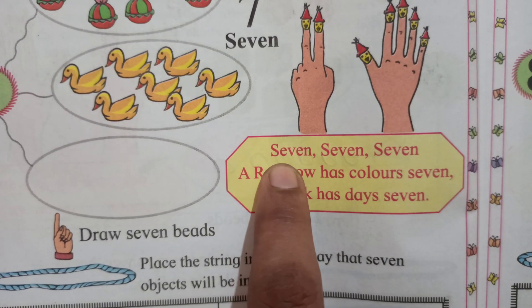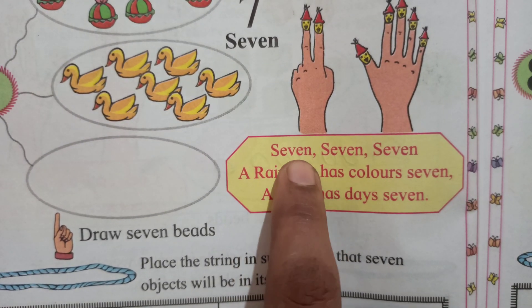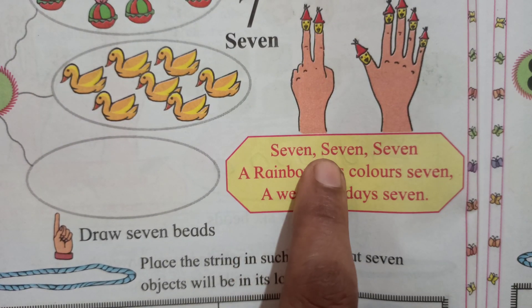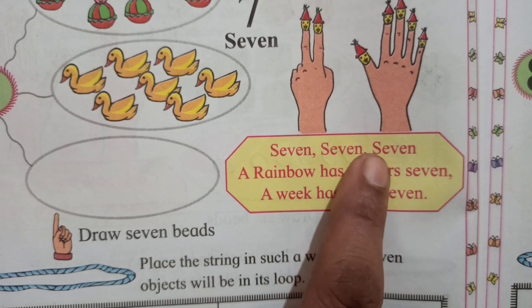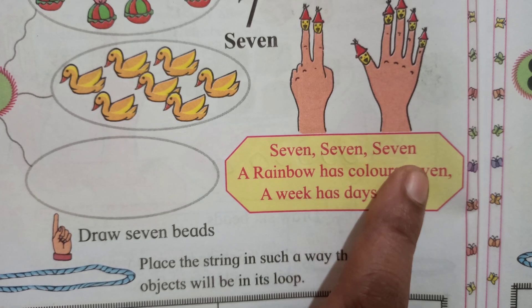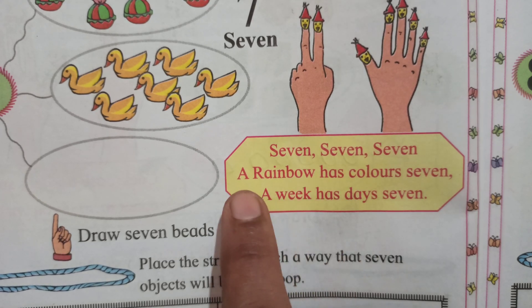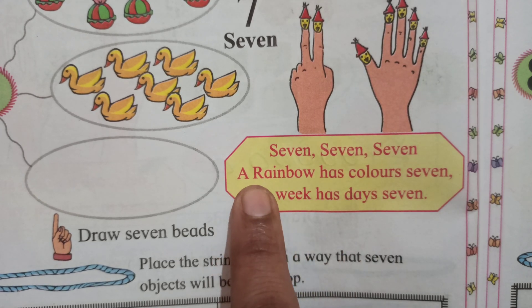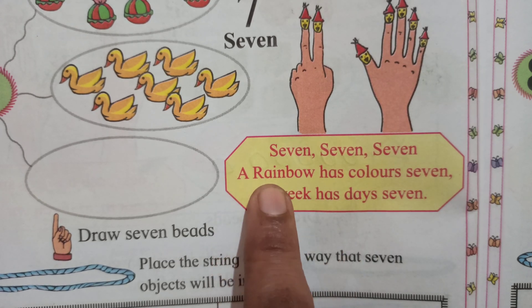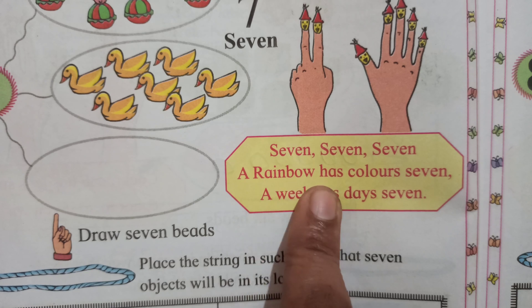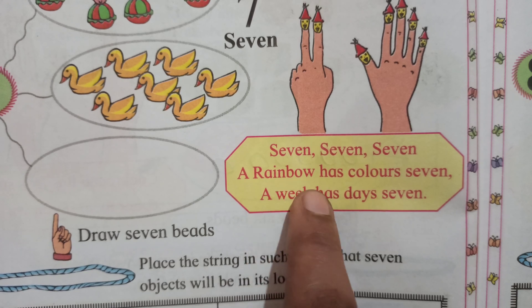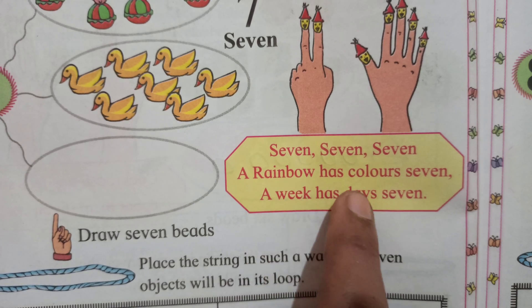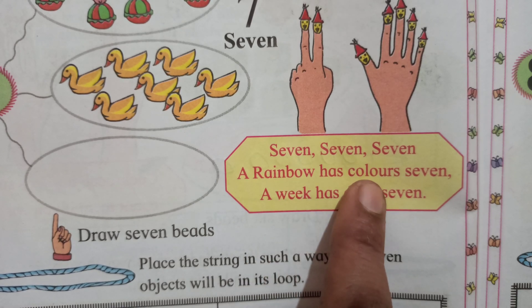S-E-V-E-N, 7. A rainbow has colors — R-A-I-N-B-O-W rainbow has C-O-L-O-U-R-S colors.